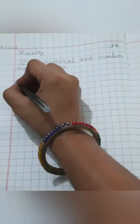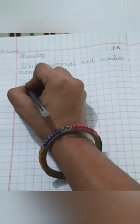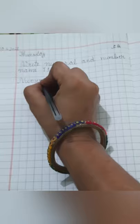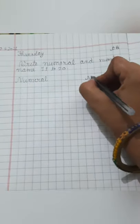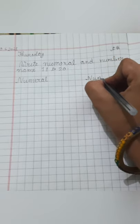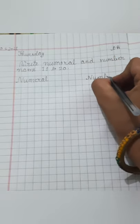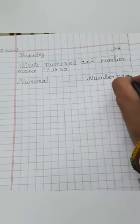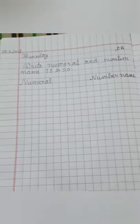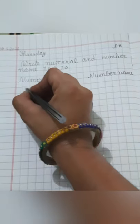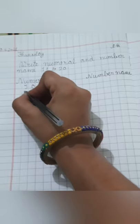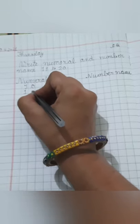Now you will write here numeral N-U-M-E-R-A-L numeral. You will write here number name N-A-M-E name. Okay. Now T-O 2. You will write here 11.